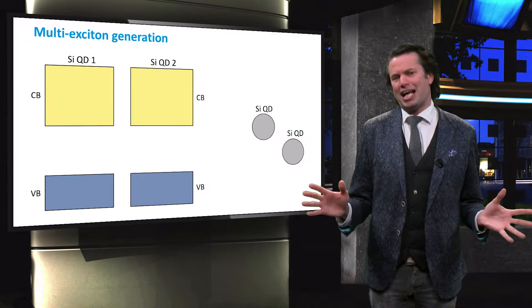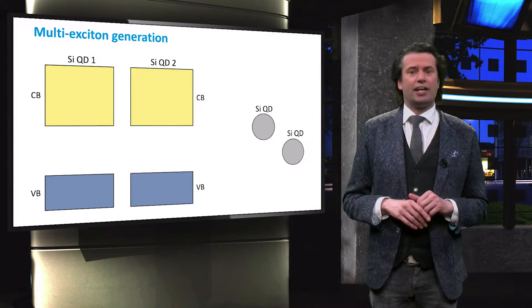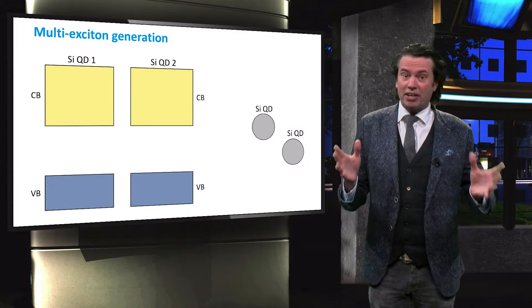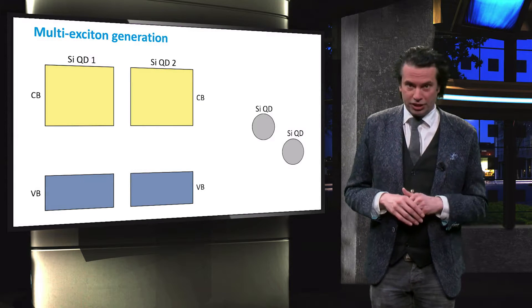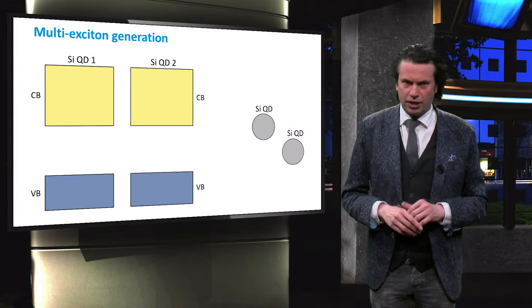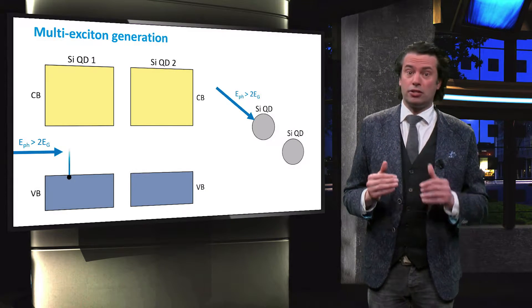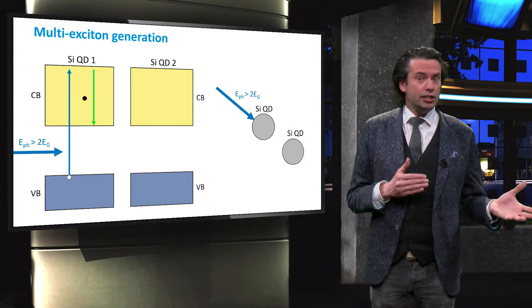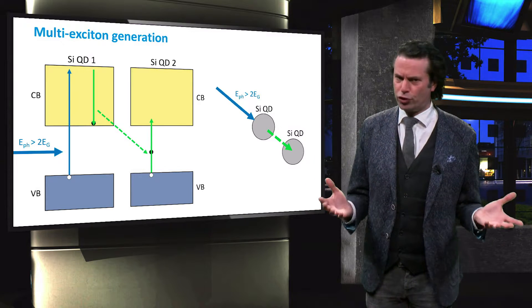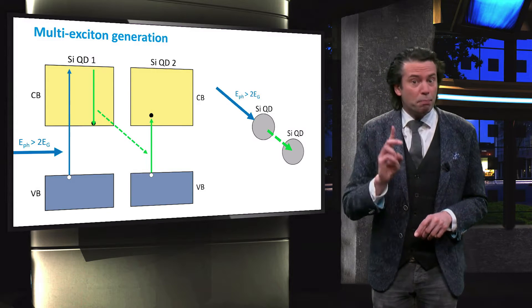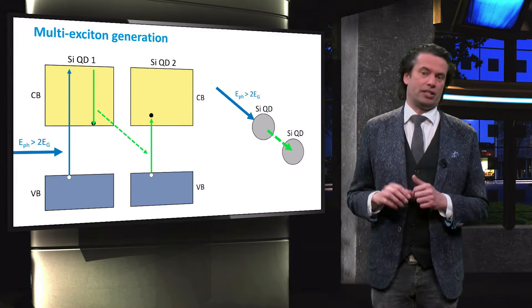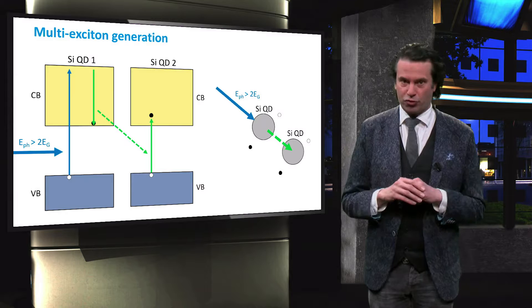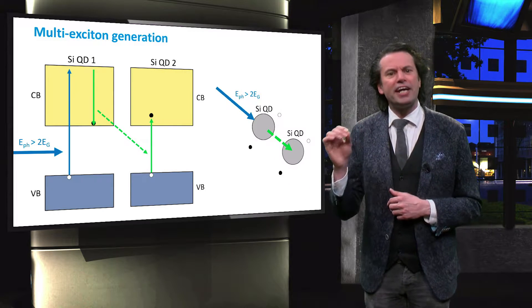Another approach to enhance the charge carrier excitation by a single highly energetic photon is called multiple exciton generation. Like with spectral downconversion, multiple exciton generation can be realized with quantum dots. Again, a high energy photon excites an electron high into the conduction band of the first quantum dot. Instead of being lost as heat, the excess energy is again transferred to a neighboring dot. In the second particle, another electron is excited into the conduction band. Now however, the charge carriers of the two excitons are separated and transported to the PV active layers before they can recombine.